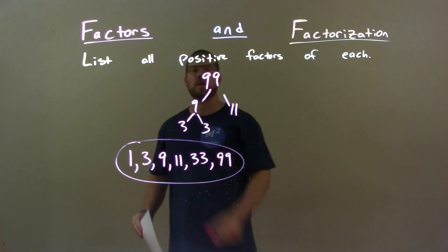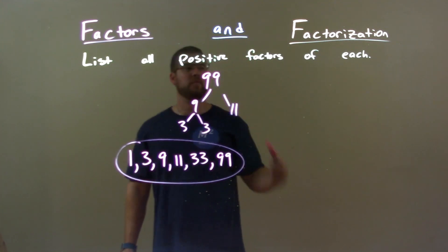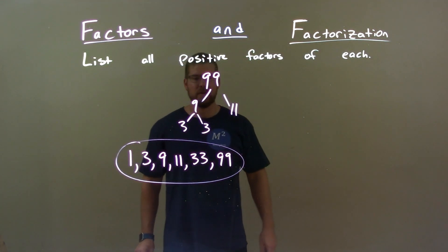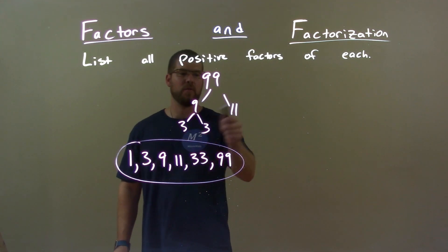Quick recap, we're given the number 99 and we define all the positive factors. First step, I wrote my prime factorization of it. Then I see how I can multiply all these out.